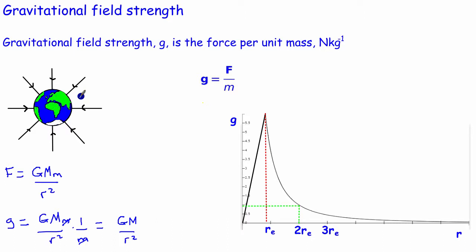There's not necessarily an object there — we could say, at a certain distance away from this planet, what is the gravitational field strength? If you look at this equation, it's proportional to 1 over r squared, so it's one of those inverse square laws again.